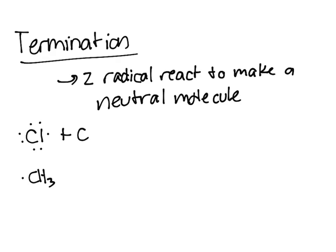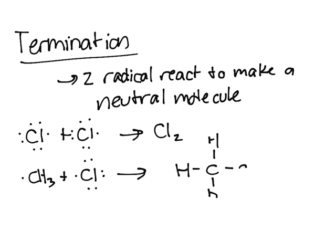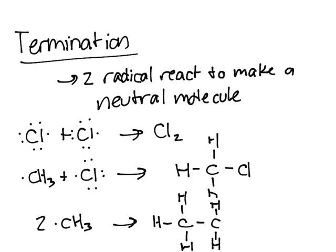You add Cl and Cl, you form Cl2. You add CH3 plus Cl, you get this. If you add two CH3s together, you'll get this. Termination steps are essentially just reaction of two radicals to form a neutral molecule. It's important to remember that in this step, no radical is going to form again. This is how it differs from the propagation and initiation steps.